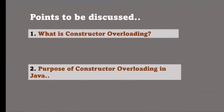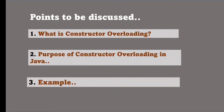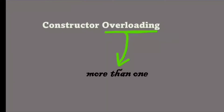These are the points we are going to discuss: what is constructor overloading, the purpose of constructor overloading, and at the end we will see an example. Now, overloading means more than one. So simply keep in mind: constructor overloading means having more than one constructor in a class. We know that a constructor is used for object initialization — we can give values to an object's fields using a constructor.